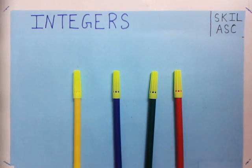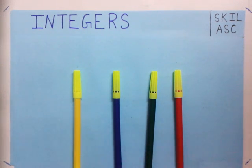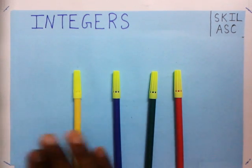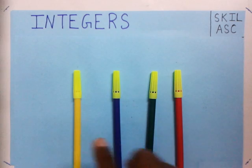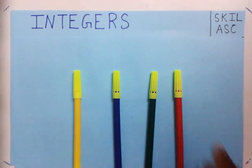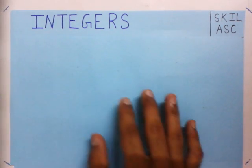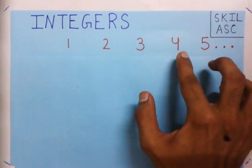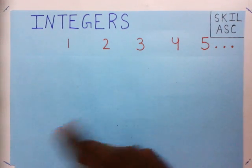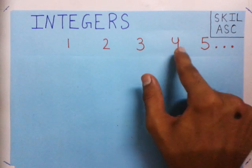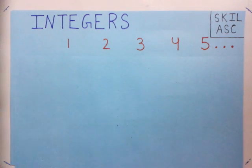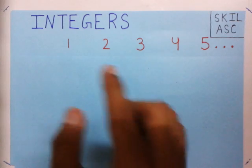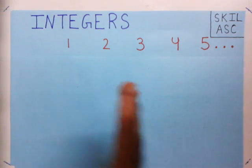Of course you can see four colors. How do you know that? You counted the number of colors as 1, 2, 3, 4. So we have used these numbers for counting.